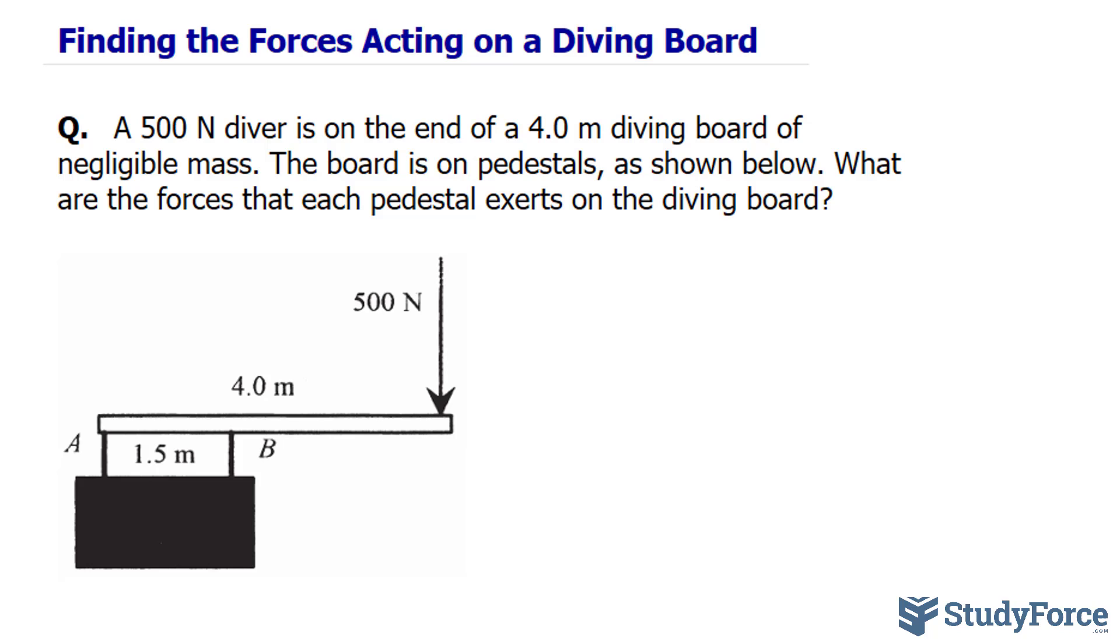Alright, so this one's interesting because we have a diver whose weight is written in newtons. Remember, to find weight is the same way you would find the force. They're exerting 500 newtons at the end of the diving board, and as this diving board compresses downwards, it will exert a force on B. In fact, B will be compressing, so it's acting against the diver.